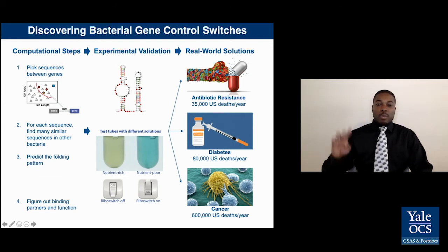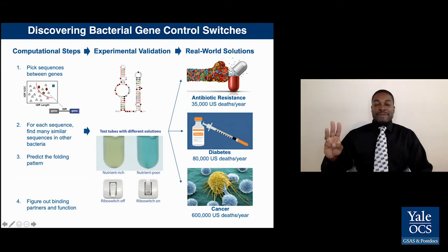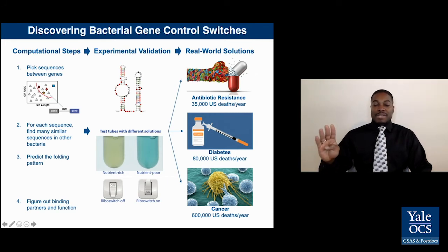I find switches with a four-step process. Step 1: Locate long, balanced RNA between protein-coding genes in one bacteria. Step 2: Search for similar sequences in other bacteria. Step 3: Find their folding pattern using sequence and structure similarities. Step 4: Predict substances for binding to figure out function, using nearby genes as clues.